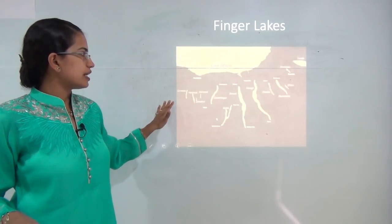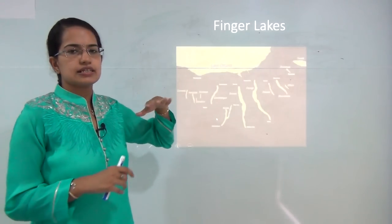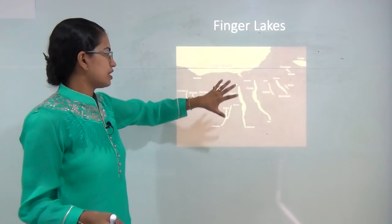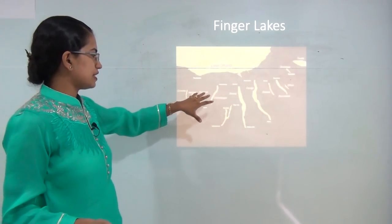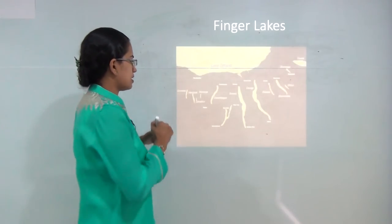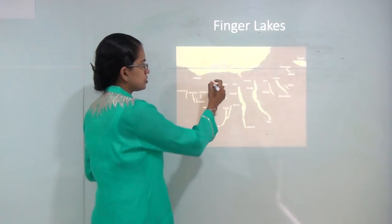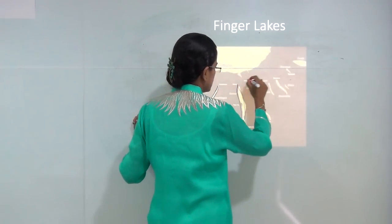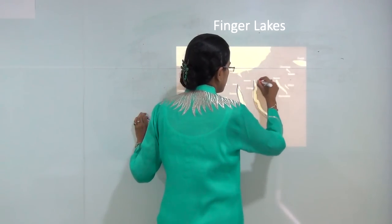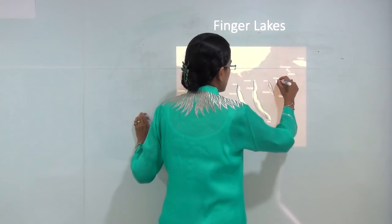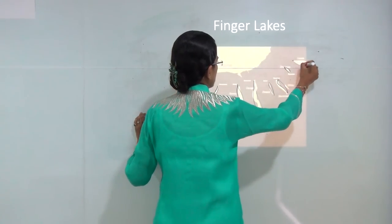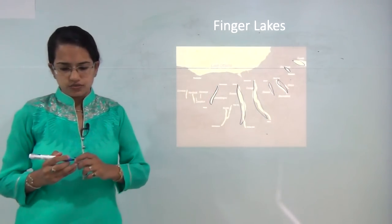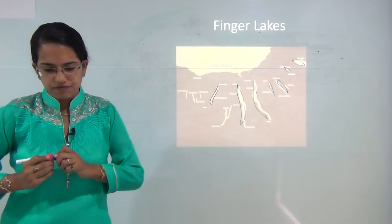Finger lakes are commonly seen in the regions of Canada, specifically around Lake Ontario. These lakes separate out as fingers from the main lake and are all glacial in origin. This is what is known as the finger lake.